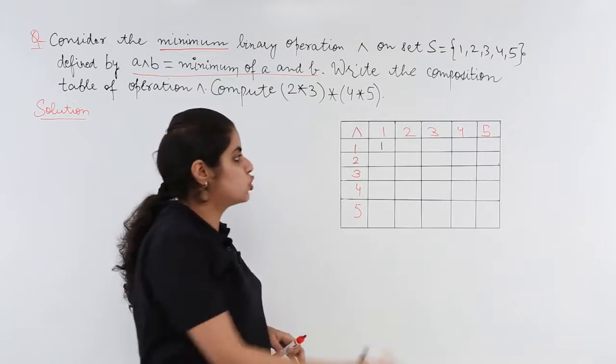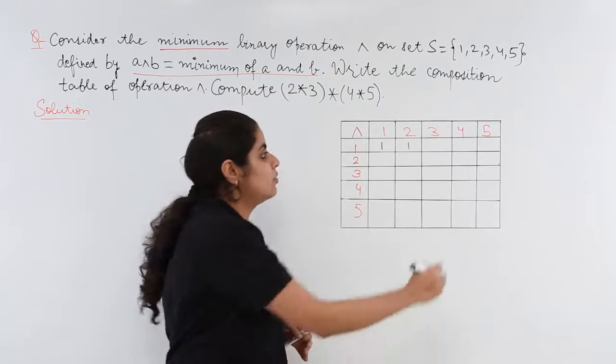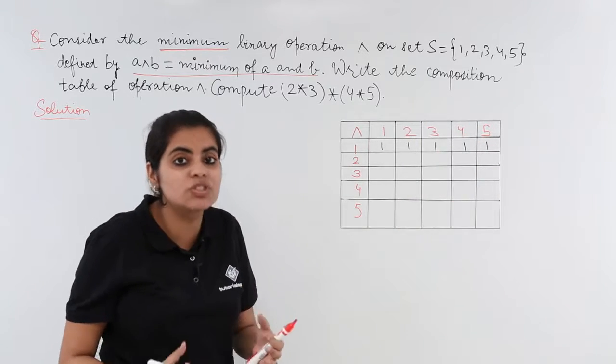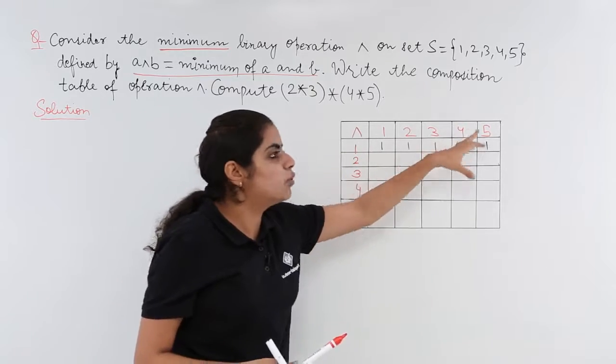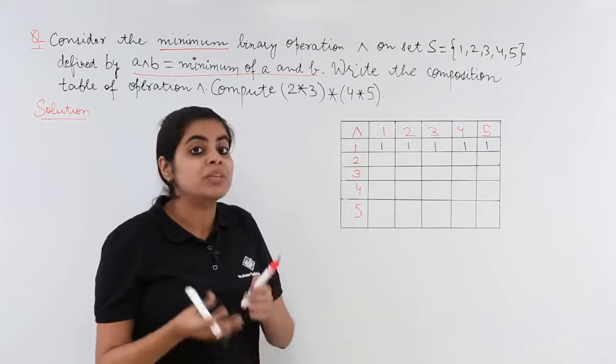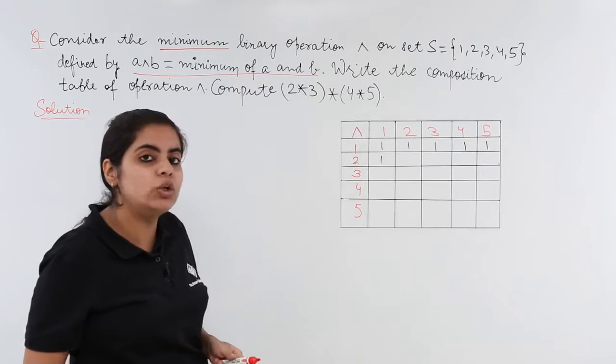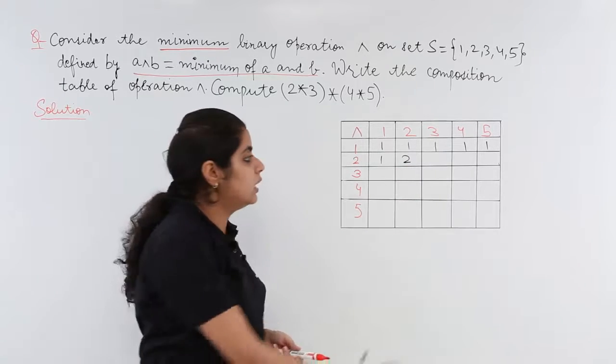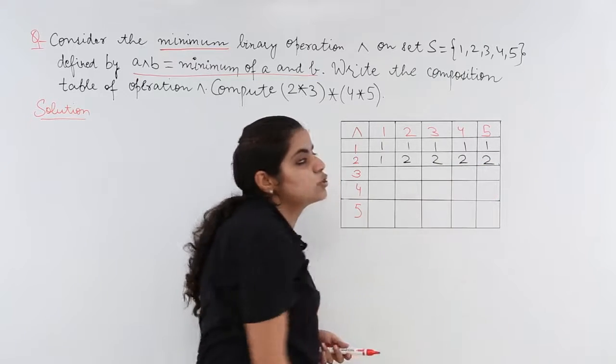Between 1 and 2, 1 is minimum. Between 1 and 3, 1 is minimum. 1 and 4, 1 and 5, 1 is minimum. Minimum means which has less value. Similarly, 2 and 1, 1 is smaller. 2 and 2, same, so 2. 2 and 3, 2 is smaller. 2 and 4, 2 is smaller. 2 and 5, 2 is again smaller.